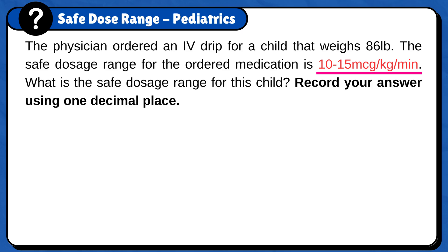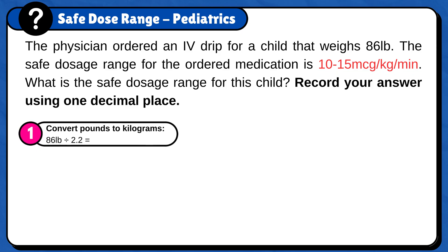Therefore, we first need to convert pounds to kilograms and then calculate 10 micrograms per kilogram per minute and 15 micrograms per kilogram per minute to find the safe dosage range. First, convert pounds to kilograms: 86 pounds divided by 2.2 is 39.09 kilograms.